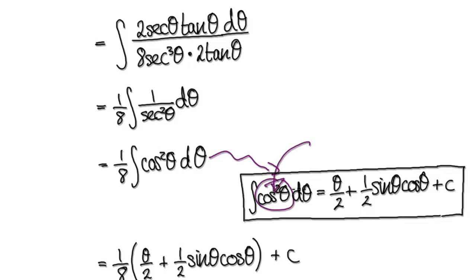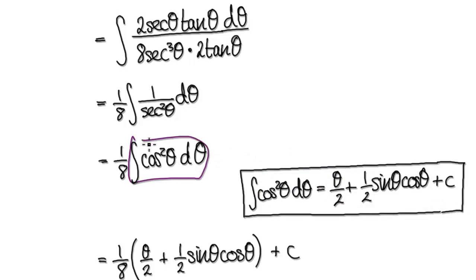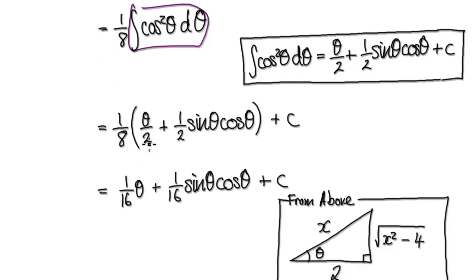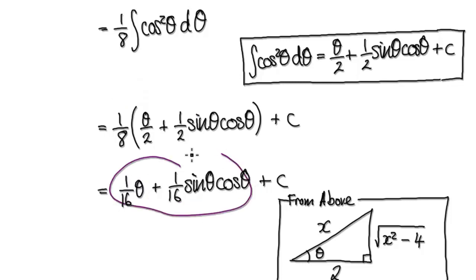By now I'm expecting you to be able to integrate cos squared, because we've seen this many times. So just jump to this. This thing here will then become this. Tidy this up: this times this would be this, and this times this would be this. So this is your answer.